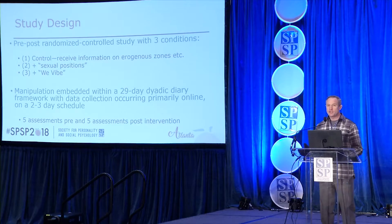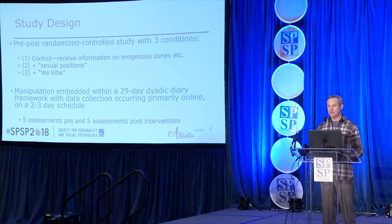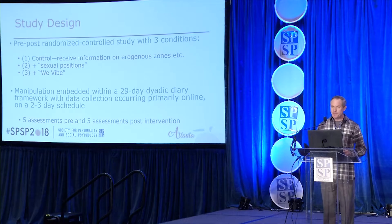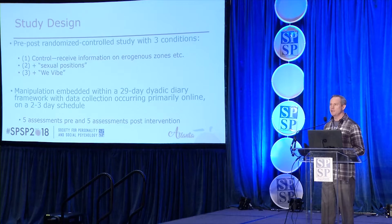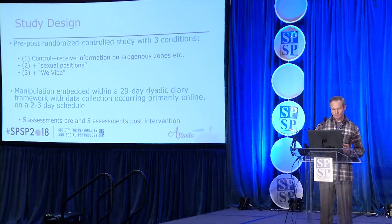The manipulation was embedded within a 29-day diary study. The manipulation occurred at day 15, with five assessments prior to the manipulation and five assessments post-manipulation, asking a series of the same questions at each time. When you bring couples in and start asking them to monitor their sex life, they'll start paying more attention and increase frequency of sex. So we wanted a period prior to manipulation to stabilize and get them used to the study design. Assessments were primarily done online, but the intervention occurred in the lab one couple at a time.